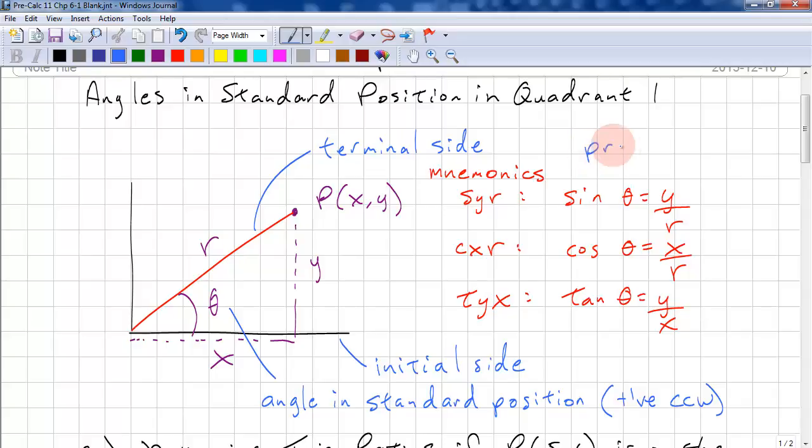These are our primary trig ratios. It's useful to remember the mnemonic circixartix. So sine theta is y over r, cosine theta is x over r, and tangent theta is y over x.